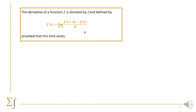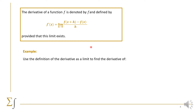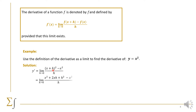Now let's take an example: find the derivative of x², using the definition of the derivative as a limit. We start by writing y′ as the limit as h→0 of f(x+h) minus f(x) over h. In our case, f(x+h) is (x+h)², so we have the limit as h→0 of (x+h)² minus x², all over h. We expand (x+h)² to get x² plus 2xh plus h². We see that the x² and the minus x² add up to zero.